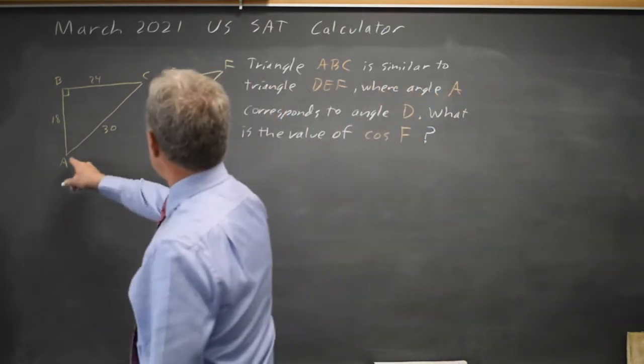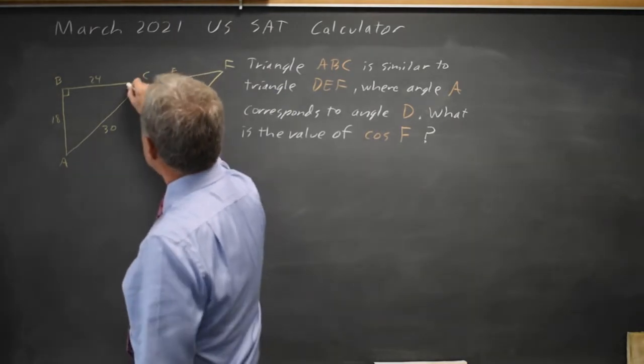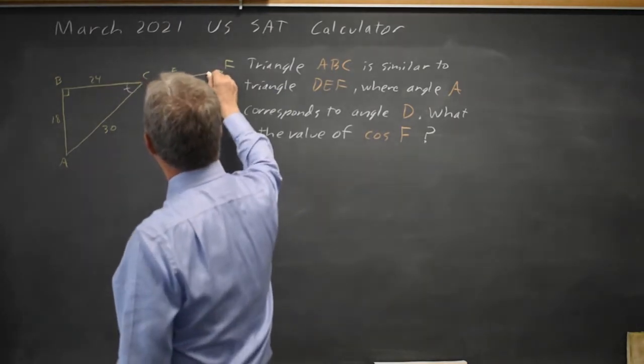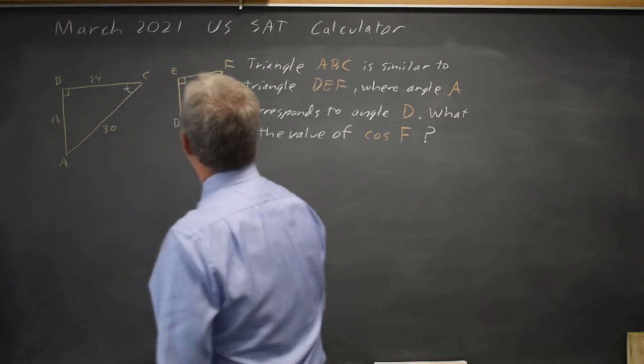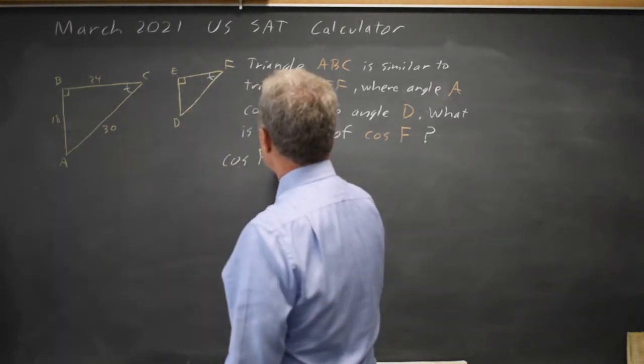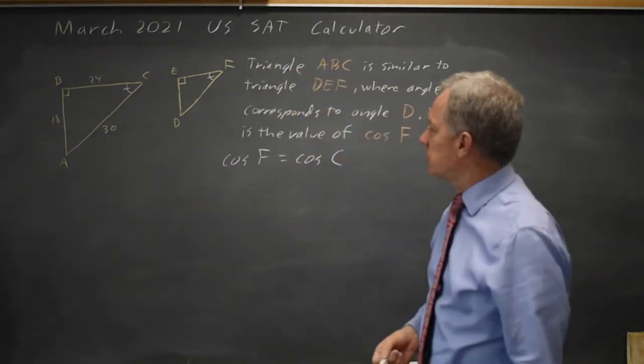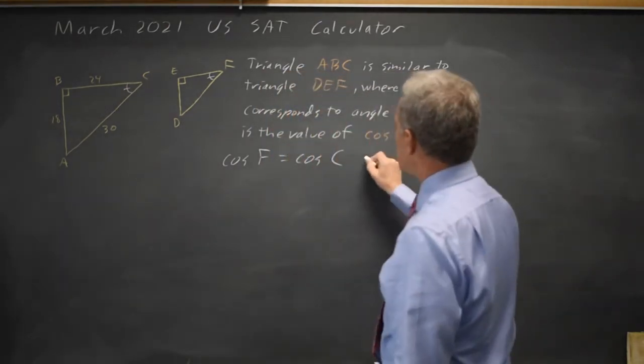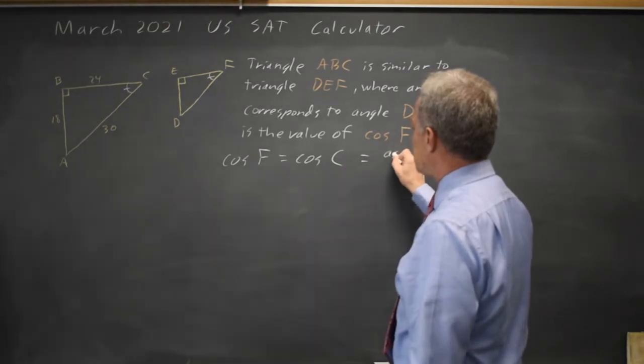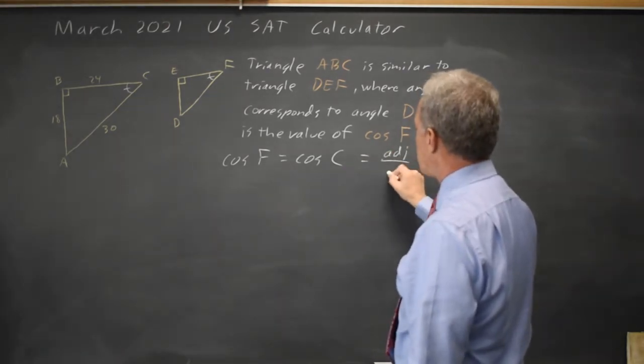Since angle A and D correspond in similar triangles, angle C and F also correspond. And cosine of angle F equals cosine of angle C because they are similar triangles. And the cosine of the angle is the adjacent leg over the hypotenuse.